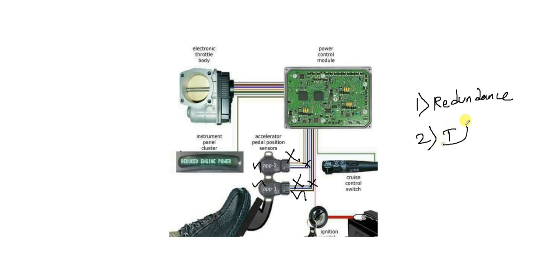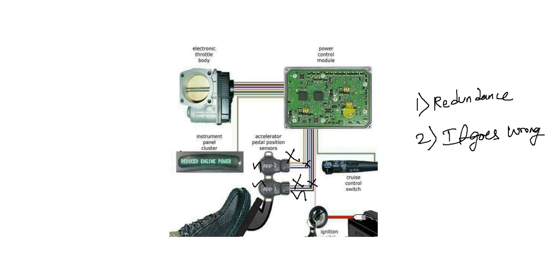The second reason is fault tolerance. If one sensor goes wrong — due to hardware or software issues — the system can still operate. If both sensors fail, nothing can be done. But if only one fails, the driver gets an indication and has time to visit a garage. These are the scenarios we need to validate: what happens when one or both sensors fail, and whether the driver gets proper indication before entering a critical stage.